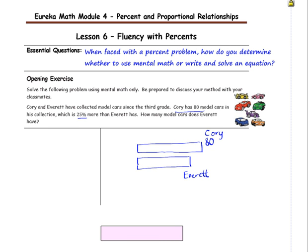And it's 25% more than Everett has. So when you're comparing it to something, what you're comparing it to is the whole. So Everett is the whole in this case. The whole is associated with 100%. So the number of Everett's cars would be right here, and that would be 100%. Then it says that Corey has 25% more. So this section right here represents 25%. So right here, that would be 125% at the end of Corey's bar.